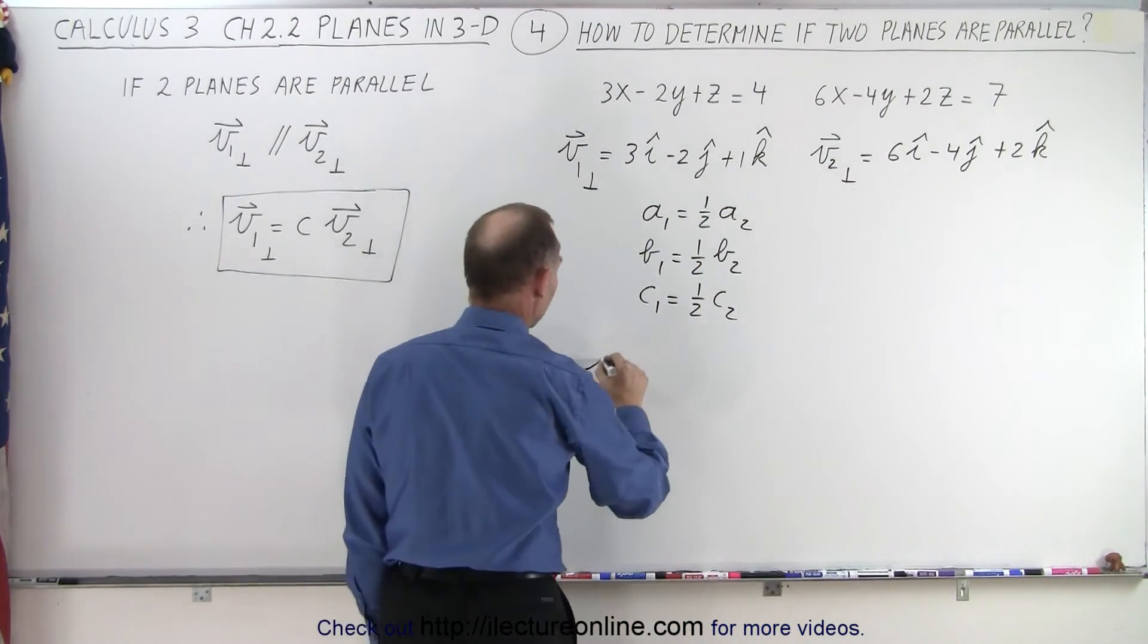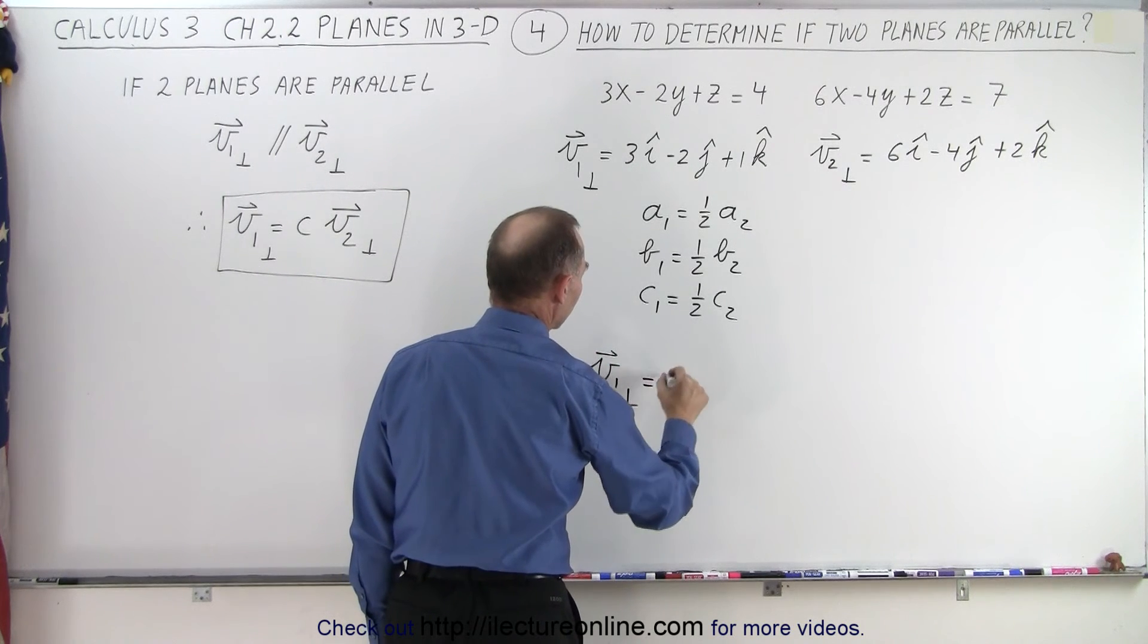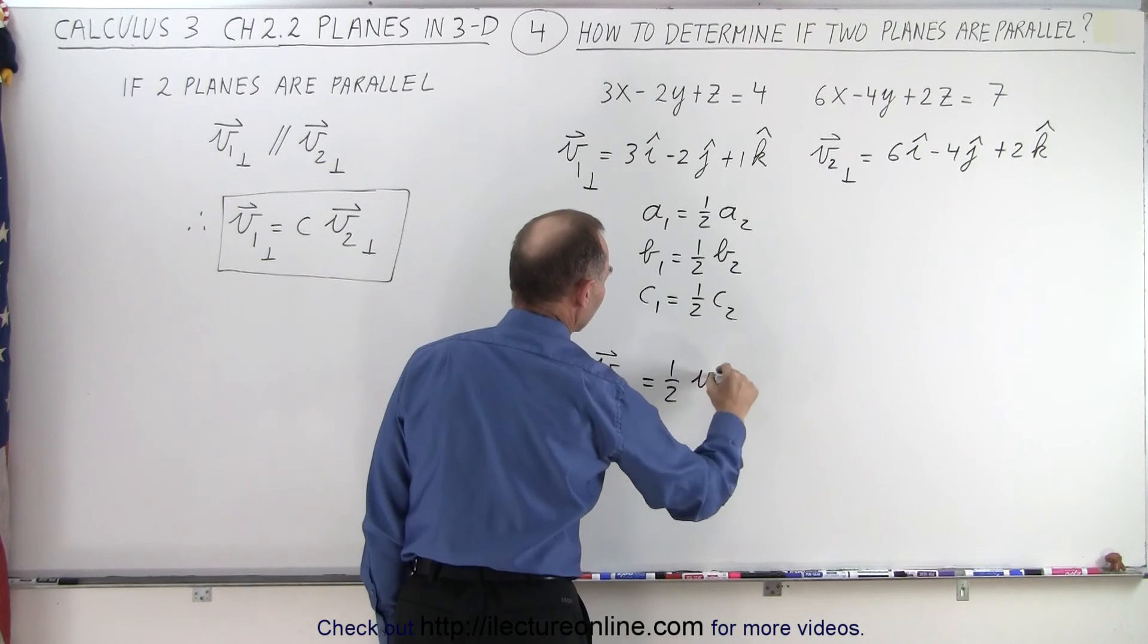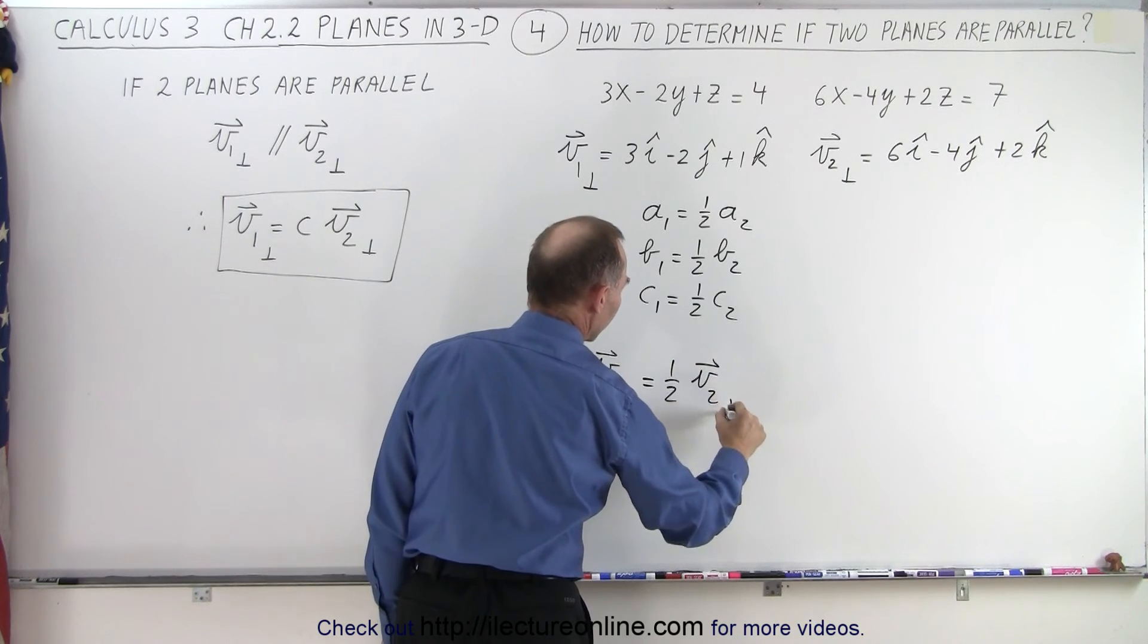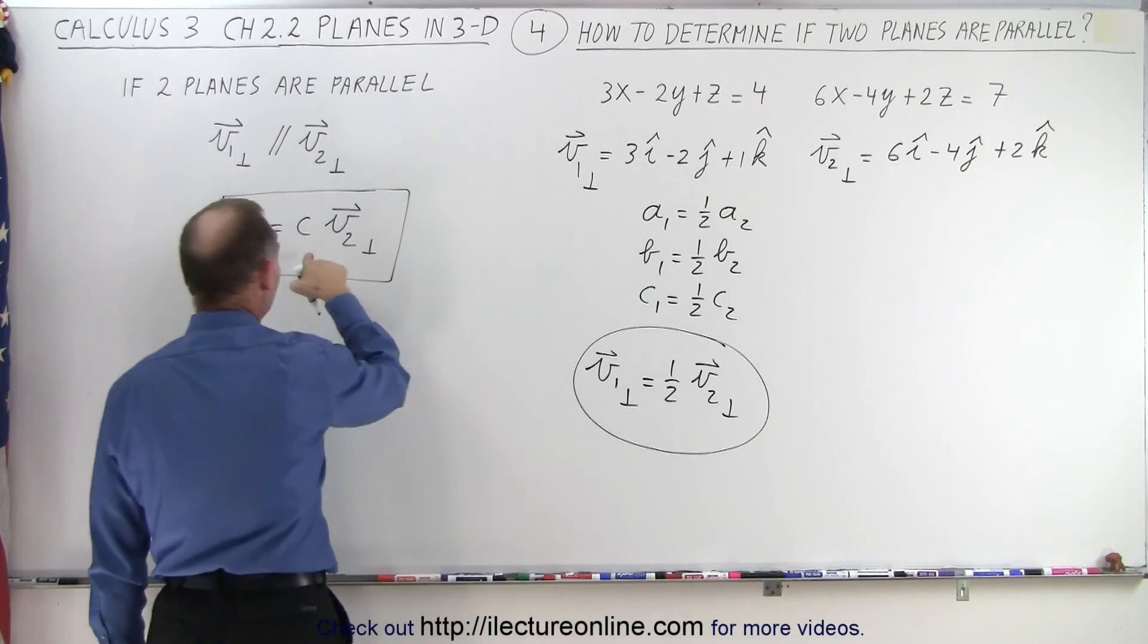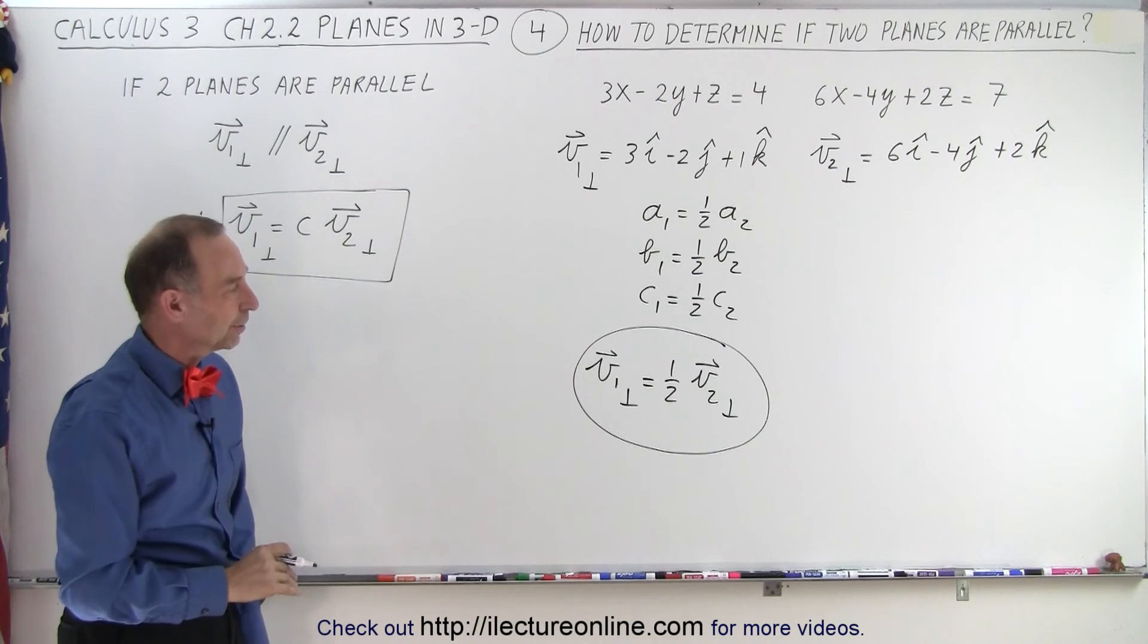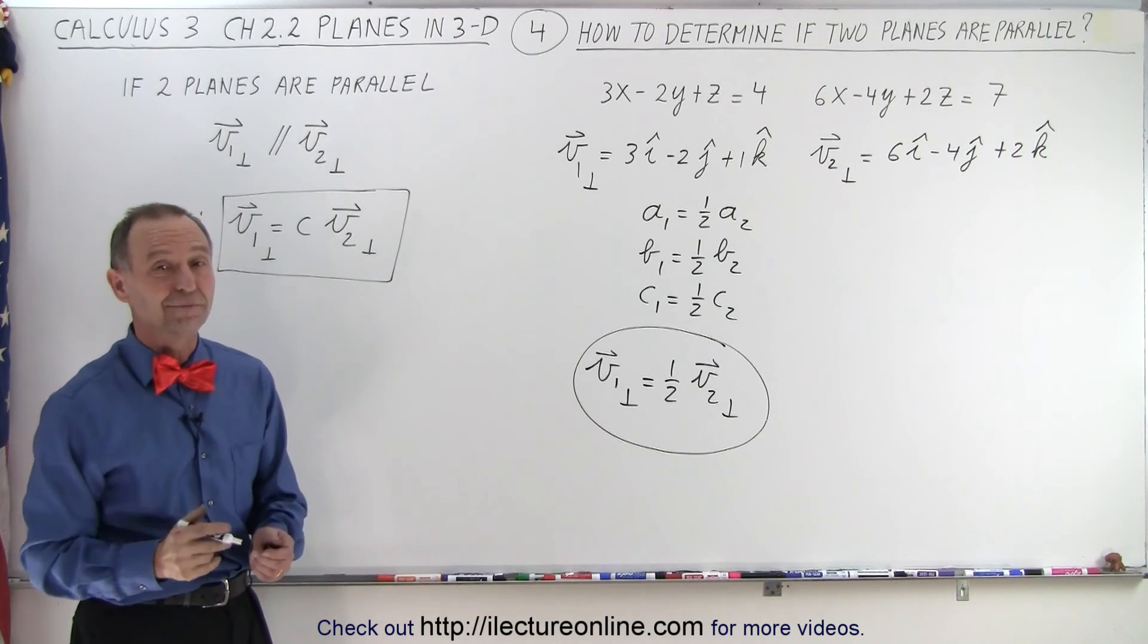And therefore, we can write that vector 1, perpendicular to plane 1, is equal to one half vector 2 of plane 2. And since we can write this, that means that those two planes must therefore be parallel to one another. And that is how it's done.